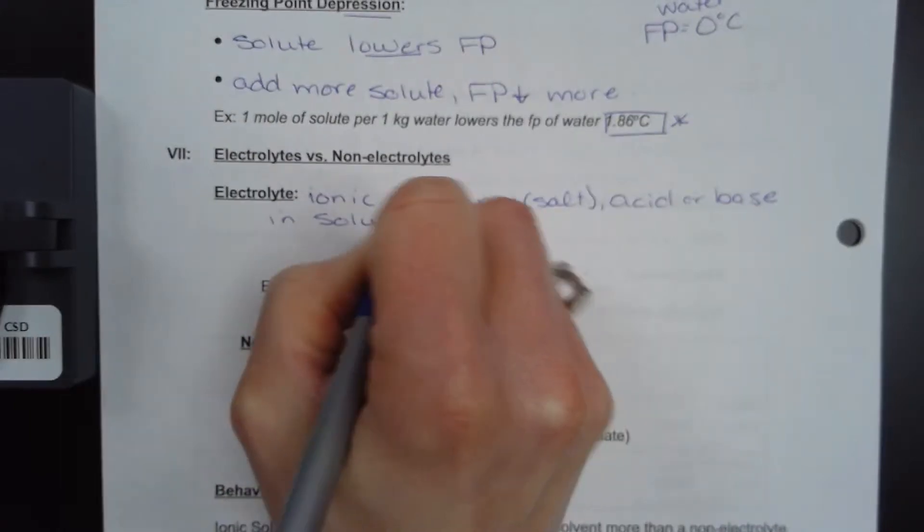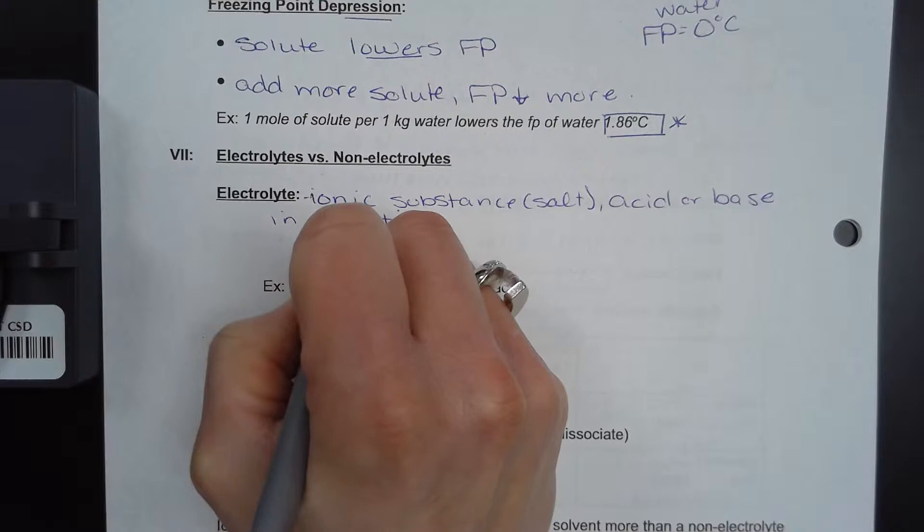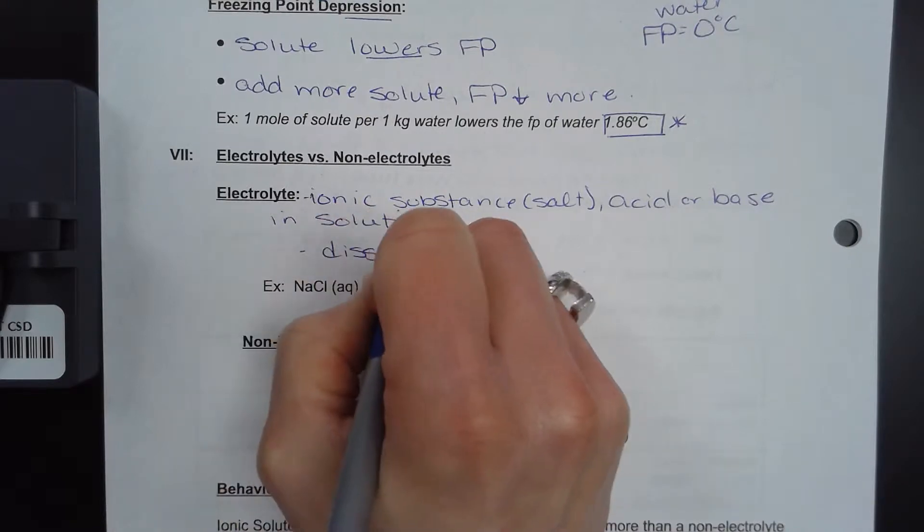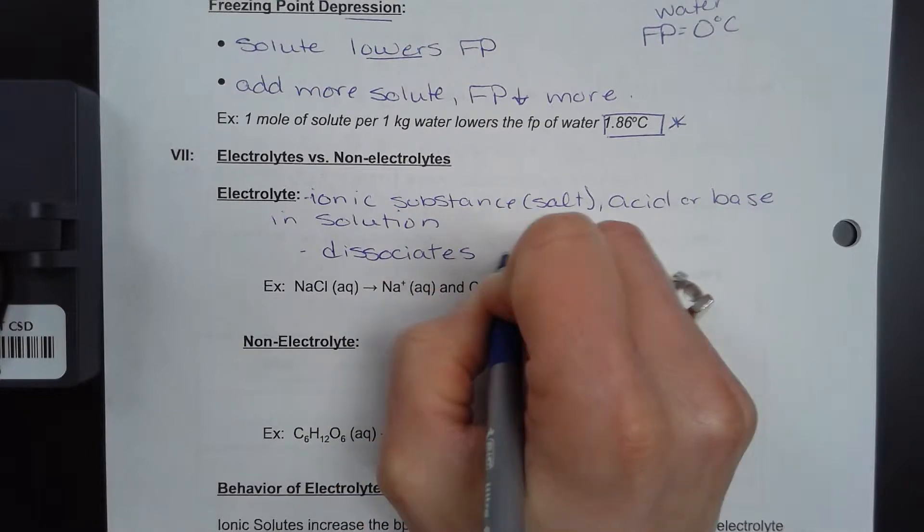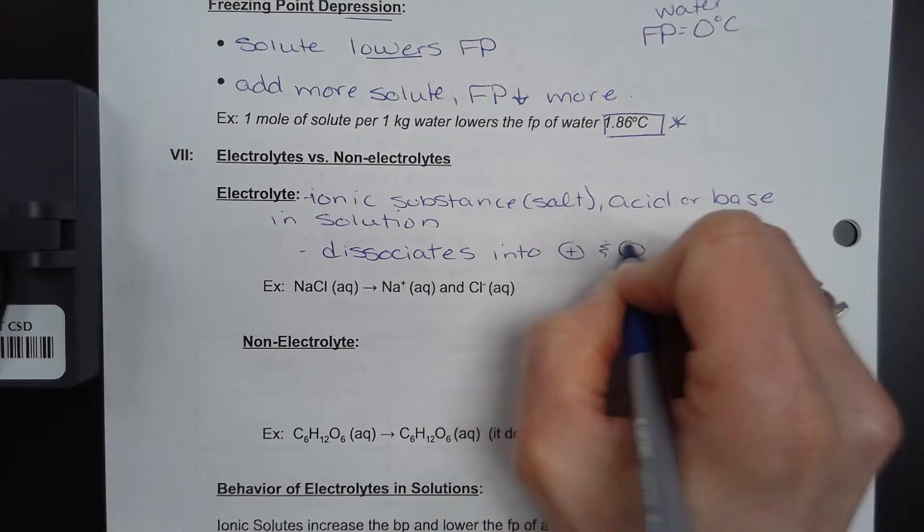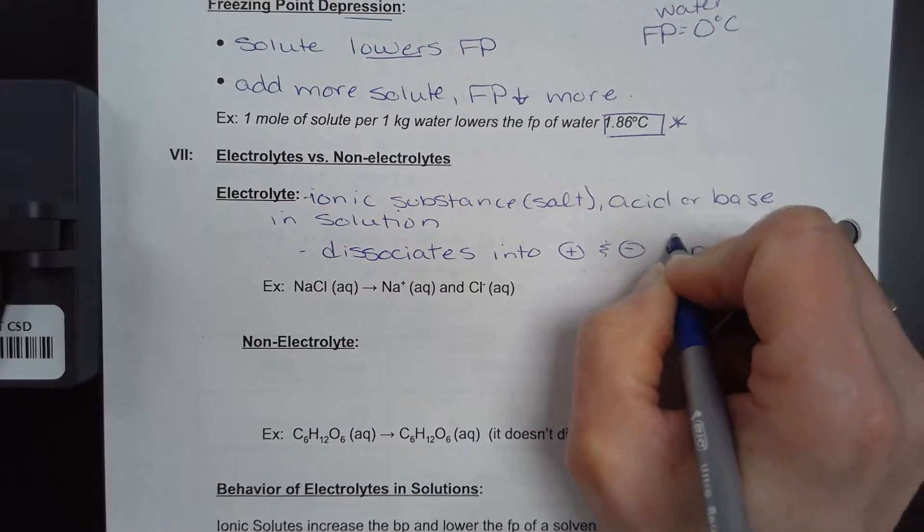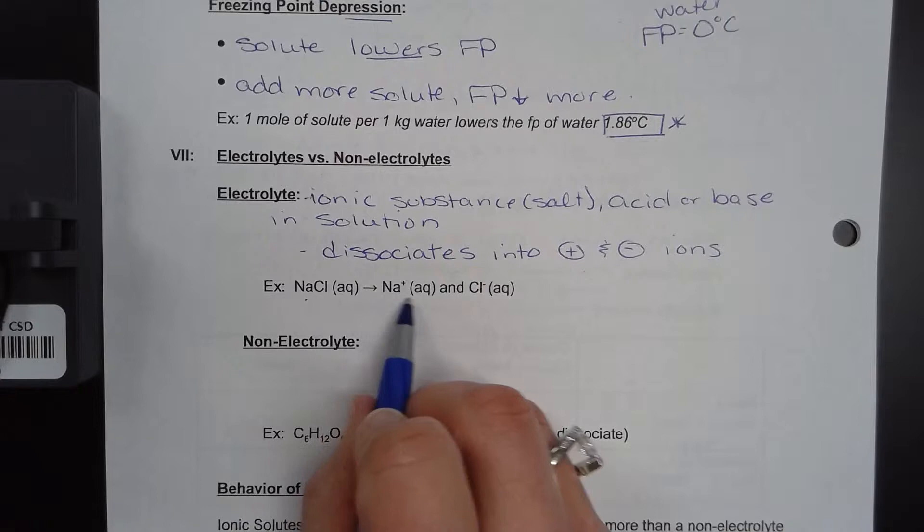The other part is dissociates. We've been hearing that word a lot lately. Dissociates into positive and negative ions. An example is NaCl when it goes into water becomes Na positive and Cl minus.